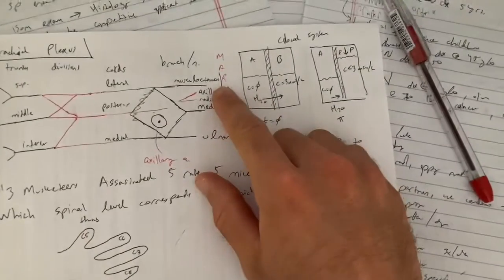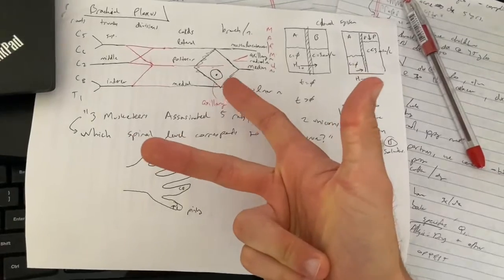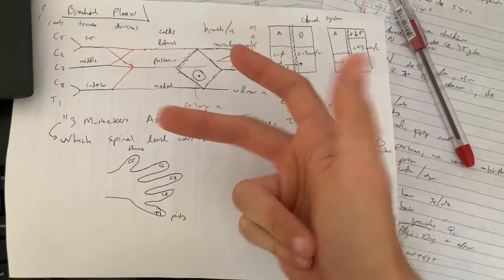Then musketeers means musculocutaneous. So if you remember MARMU, musculocutaneous must be your C5, C6, C7 spinal levels that map to that.